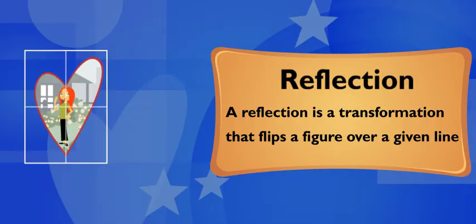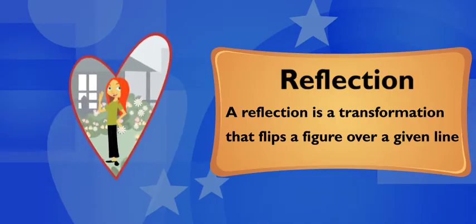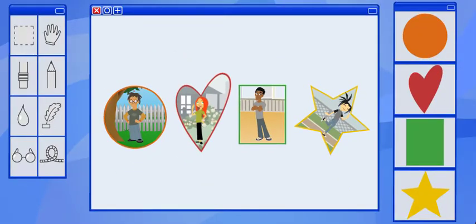You know, you can reflect an image in any direction you want. You just have to pick a different line on the grid. Oh, cool. I think I like that reflection best. Me too, Zoe. That looks really good.